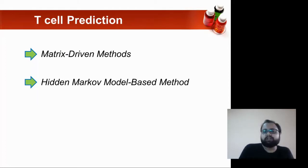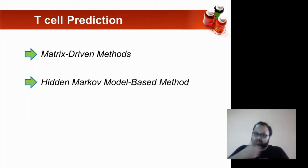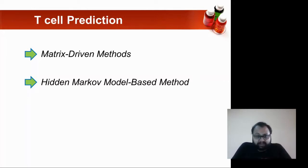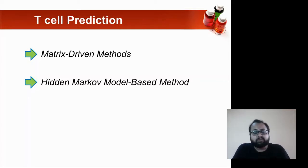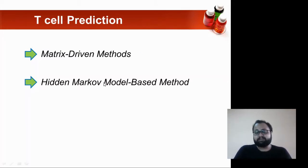Second is the hidden Markov model-based (HMM) method. HMM predicts the next event based on the current event — for example, what happens tomorrow is based on what I am today. In this context, it helps predict what amino acids will be present in your epitope region.